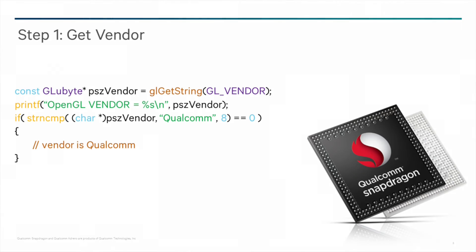For step one, we need to determine the vendor of the GPU. This is done using the glGetString call with the GL_VENDOR parameter. The return vendor string should be Qualcomm.